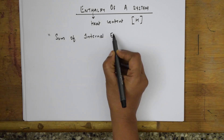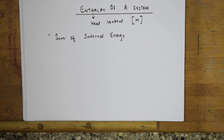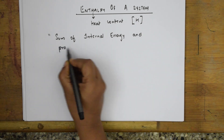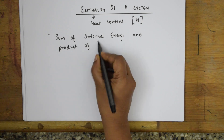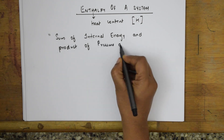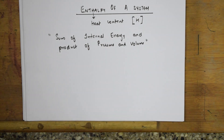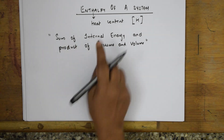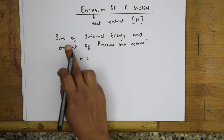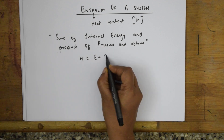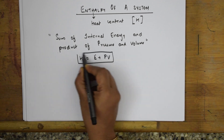I have already covered the internal energy concept — it is the combination of rotational energy, kinetic energy, and vibrational energy. So enthalpy H is the sum of internal energy and the product of pressure and volume. In equation form: H = E + PV. This is called the enthalpy of the system.